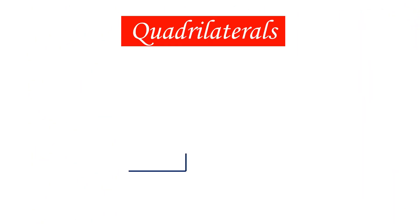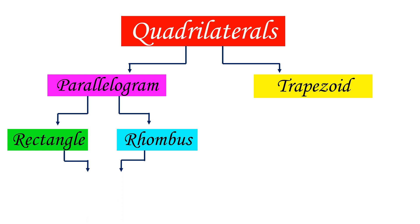Look at the illustration. A rectangle, rhombus, and square are all parallelograms. They have two pairs of parallel sides, while trapezoid is not a parallelogram. It consists of one pair of parallel sides.